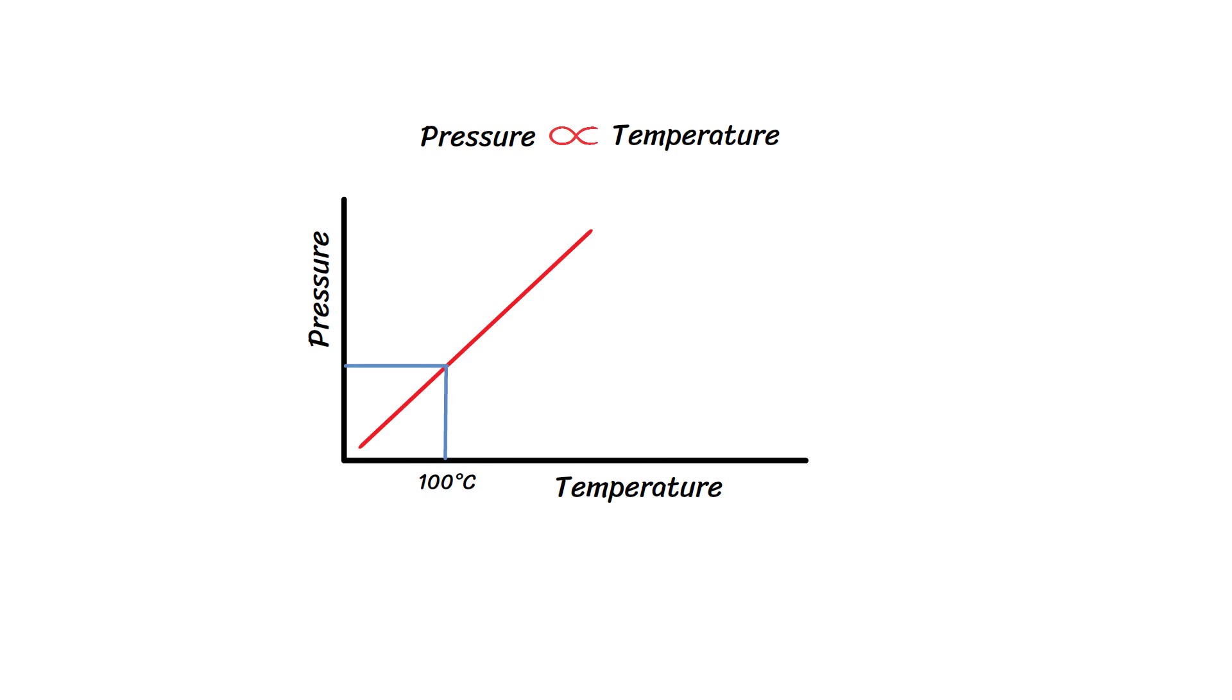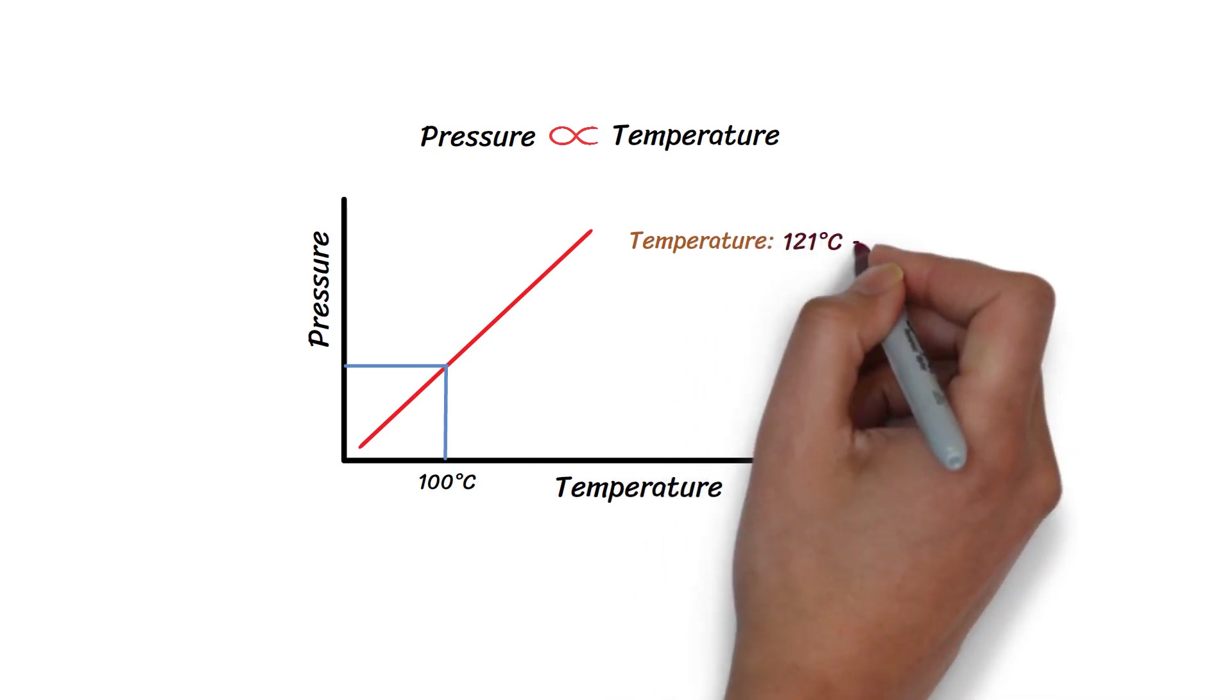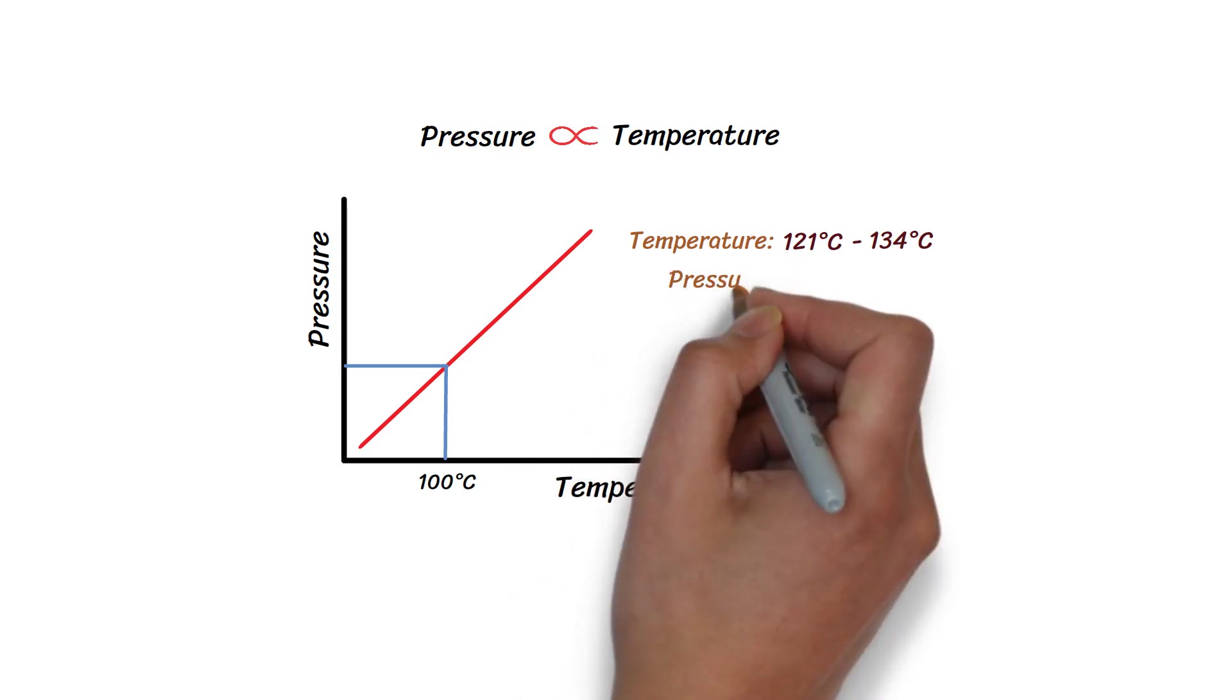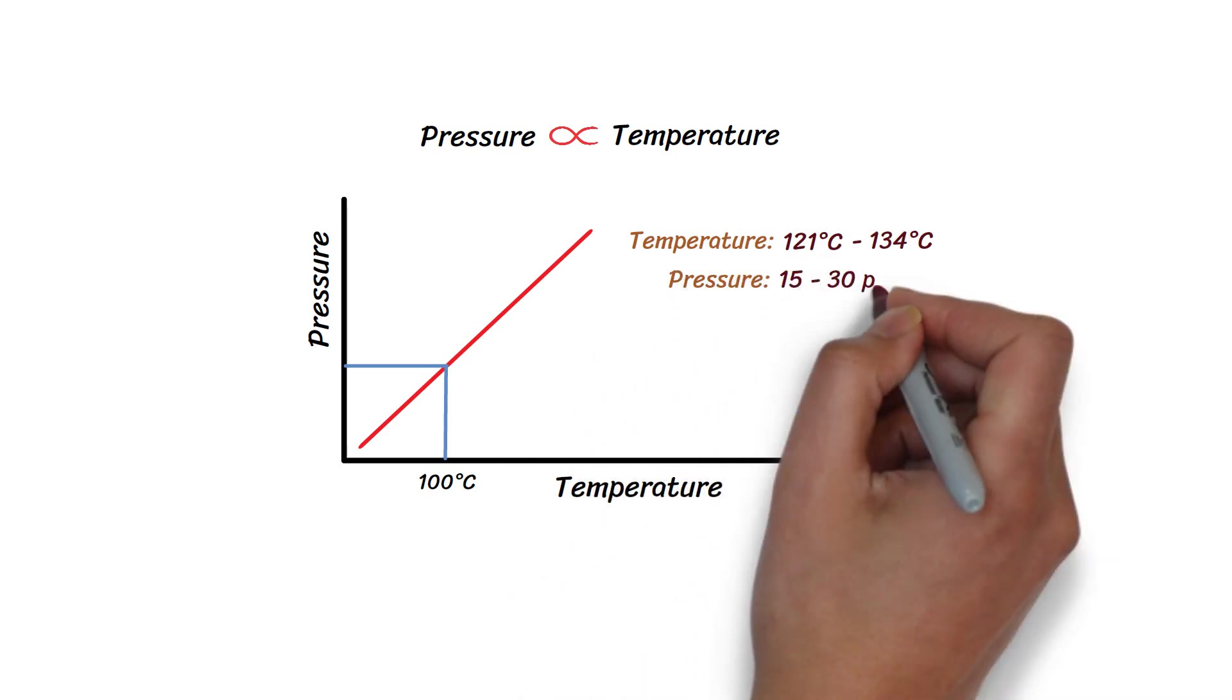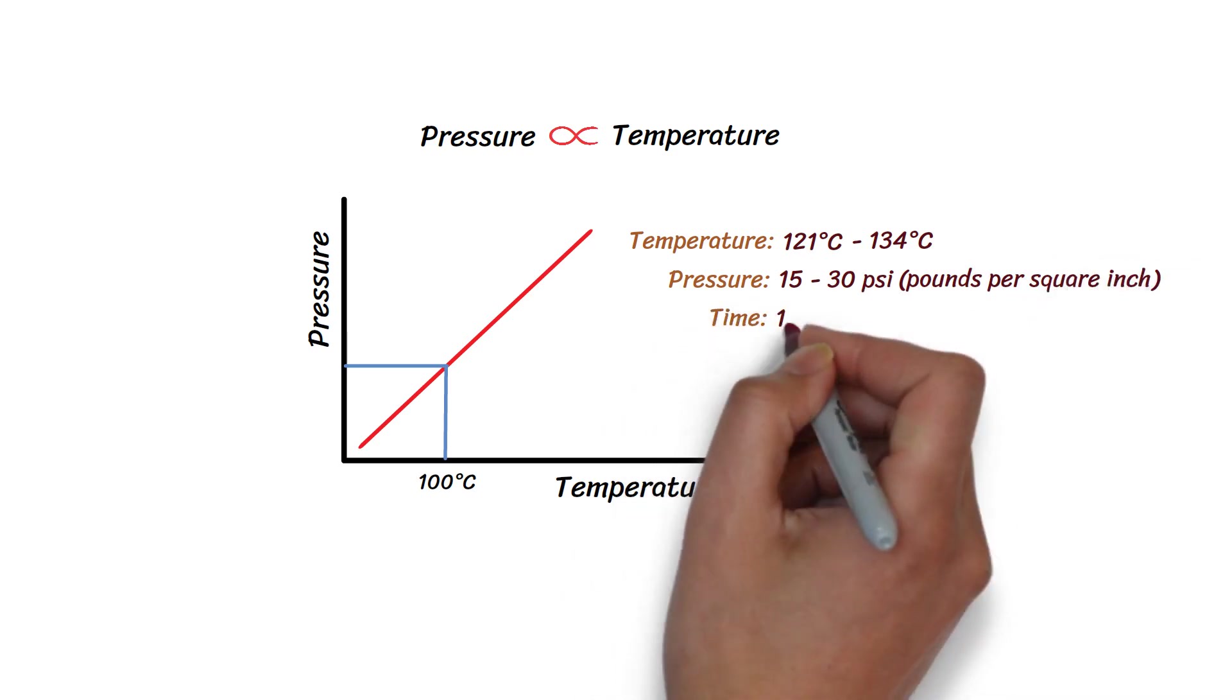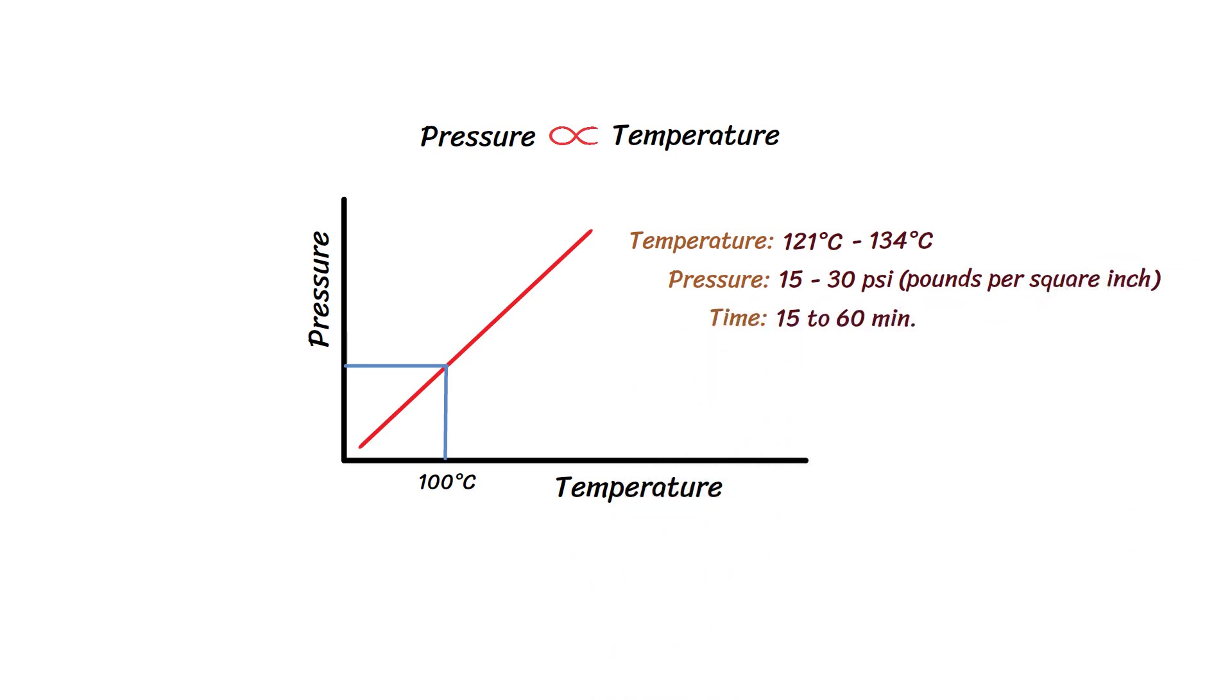Usually, an autoclave operates at a temperature ranging between 121 and 134 degrees Celsius. Pressure is between 15 and 30 psi, or pounds per square inch. And it takes 15 to 60 minutes to sterilize the material, depending on the type of load.